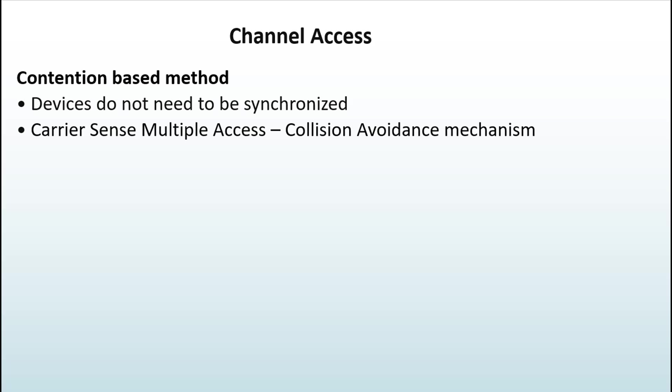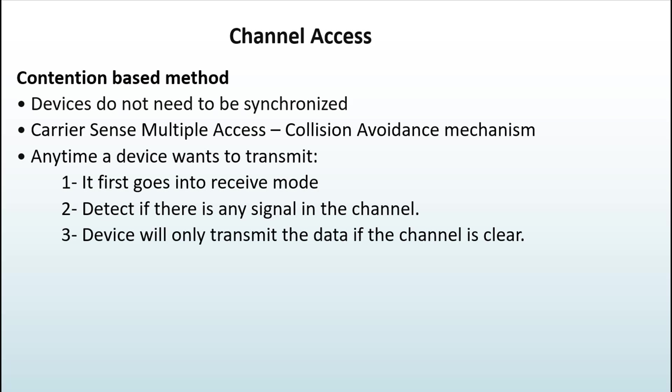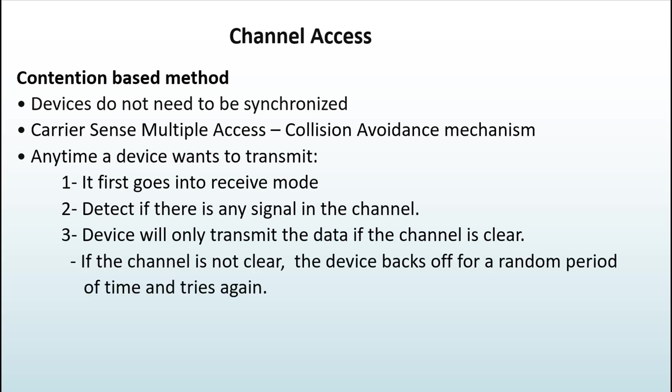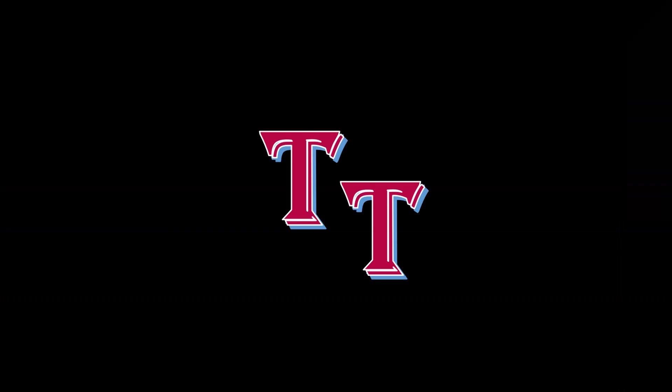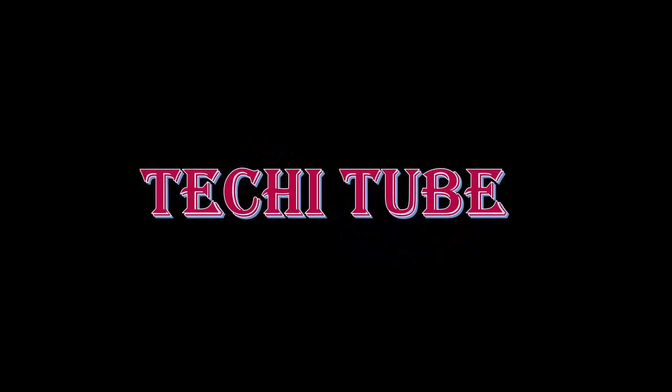In CSMA-CA, any time a device wants to transmit, it first goes into receive mode to detect if there is any signal in the channel. It will only transmit if the channel is clear. However, if the channel is not clear, the device backs off for a random period of time and tries again. That's about it for this tutorial — I hope you liked it and found it helpful. If you did, hit the thumbs up and subscribe, and leave any comments below. Thank you for watching!